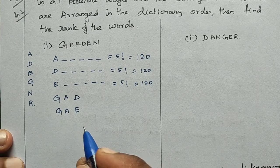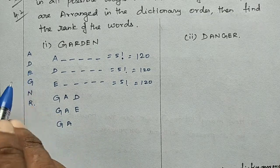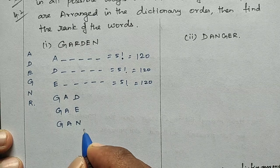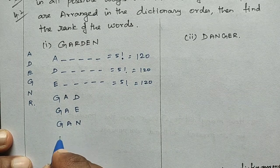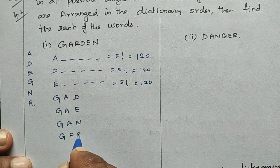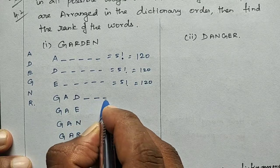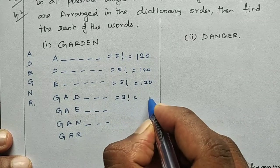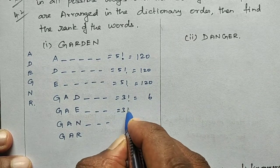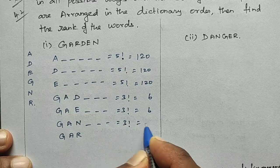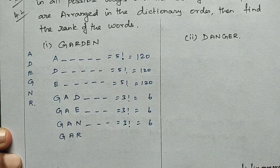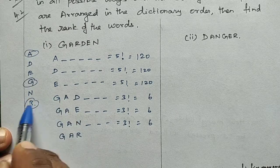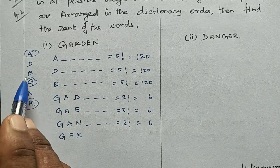Under GAR, the remaining letters are D, E, N. We fix GAR and count arrangements of D, E, N before GARDEN. That is 3 factorial = 6 arrangements. GAR is fixed, and the remaining letters DEN arranged in order gives 3 factorial = 6.